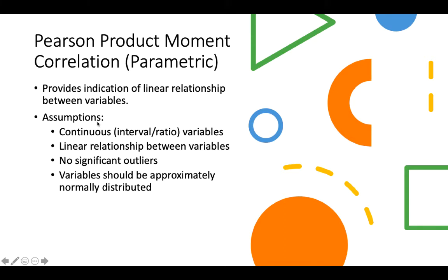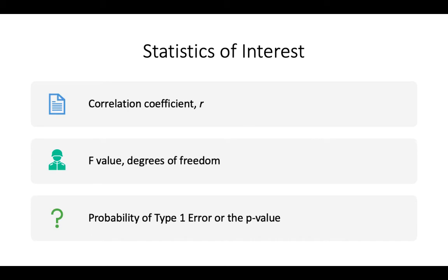Assumptions that need to be upheld for Pearson product moment correlation: your data needs to be continuous, there should be a linear relationship between the variables, it should not contain any significant outliers, and remember — normal distribution. The statistics of interest are the correlation coefficient, also known as R, the F value and the degrees of freedom, as well as the probability Type 1 error, or our famous P-value.